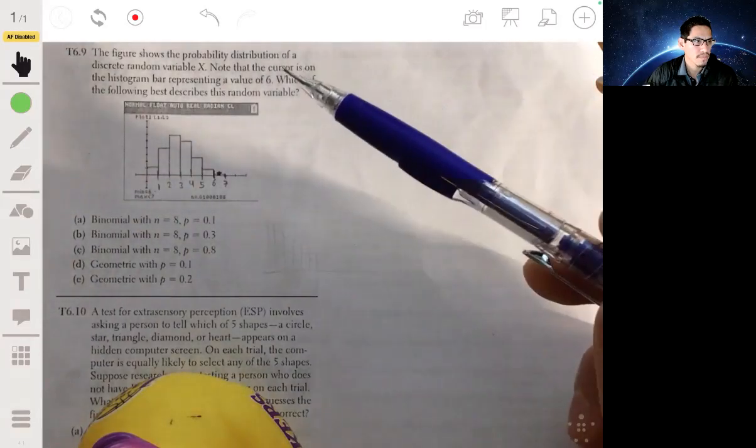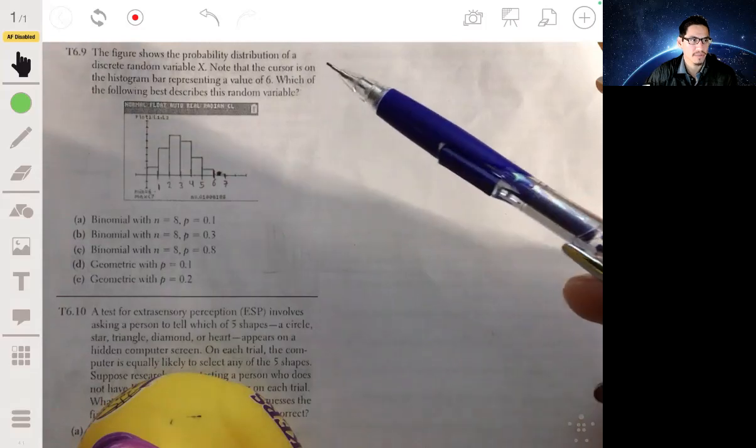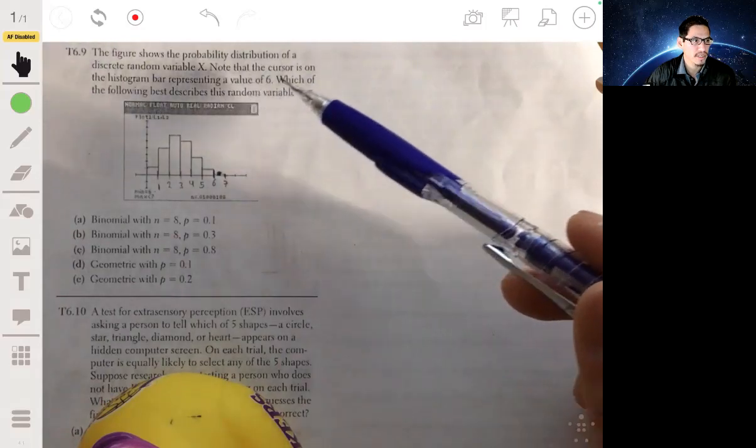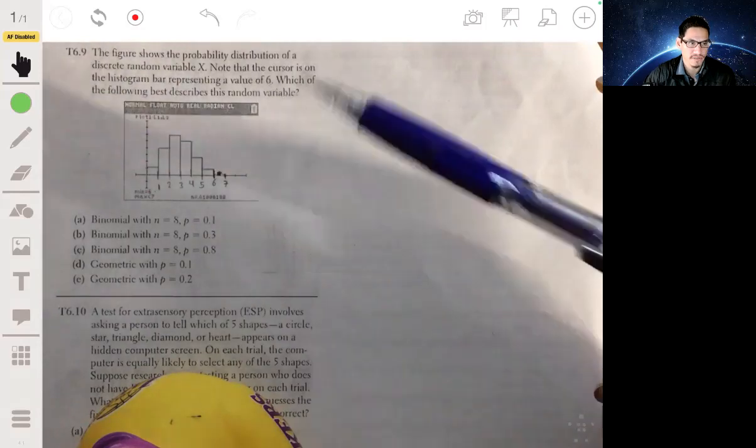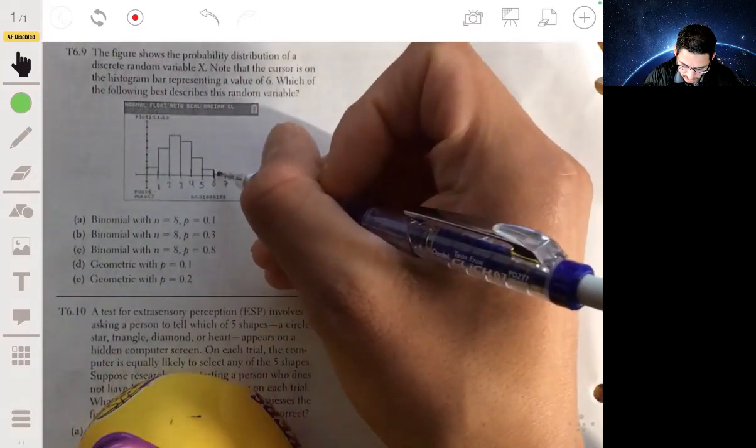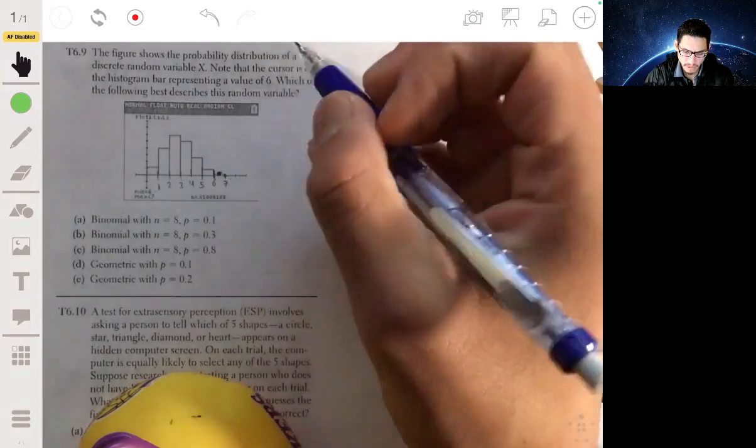Okay, here we have a figure that's showing the probability distribution of a discrete random variable X. It shows that the cursor is on the histogram bar representing a value of six, so that's what this dot is.